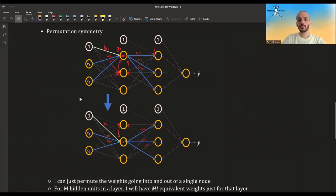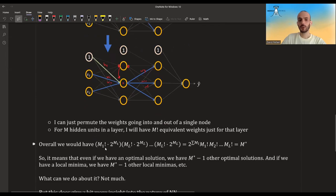So for three nodes in this hidden layer, we have three factorial ways of permuting the different weights. And overall, we would have three factorial times two to the power of three.